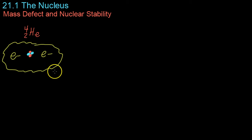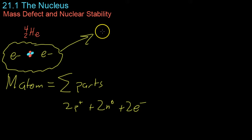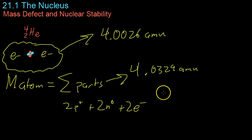Now, you would expect that the total weight of this atom, that is, the mass of the atom, would be equal to the sum of its parts. So, two protons plus two neutrons plus two electrons. But what you find is that the actual mass of a helium-4 atom is 4.0026 amu. However, the sum of its parts is 4.0329 amu.